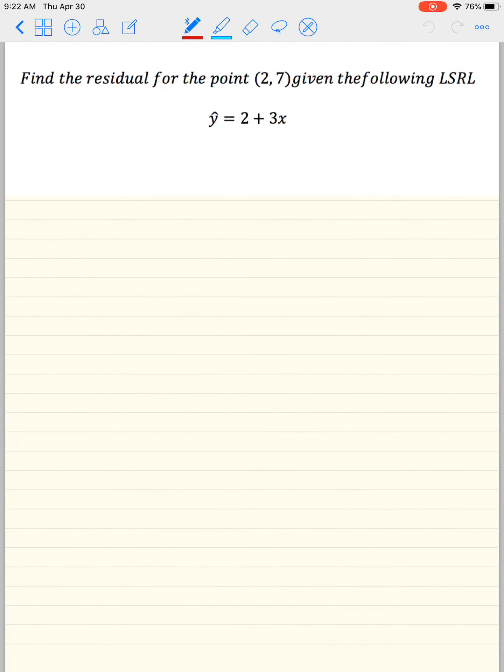Find the residual for the point (2,7) if you have the least square regression line y hat equals 2 plus 3x. So the first thing I want to say to myself is residual equals y minus y hat. Do not write r because r is the correlation coefficient and we don't want to mix those up. So I'm looking for the residual, that's my unknown. y is the point, remember this is x comma y. Y is the point 7 minus I now have to find my y hat.